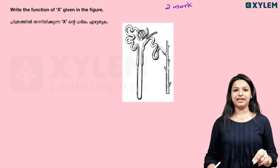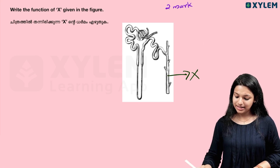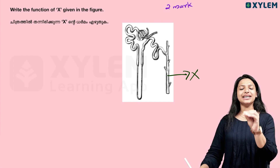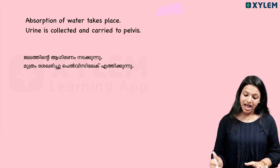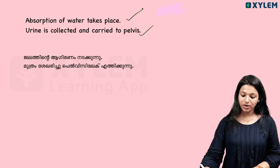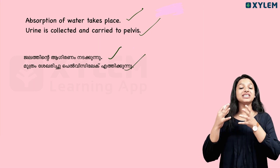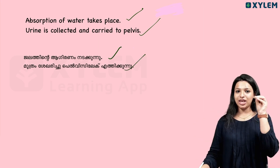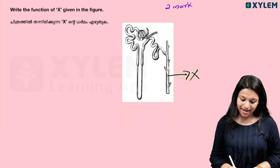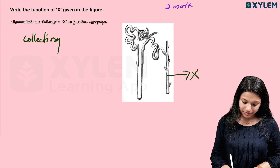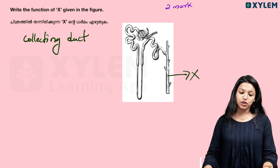Write the function of X given in the figure — in the nephron picture. What is the function of X? Absorption of water takes place and carries it to the pelvis. X refers to the collecting ducts, which collect and carry water.